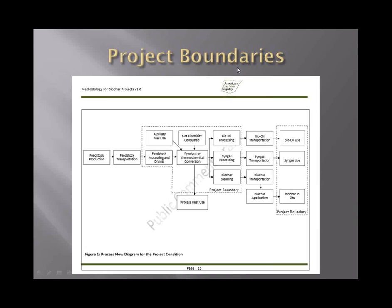We take everything from the sustainable feedstock product, transportation through the pyrolysis process, either the biochar blending, the syngas processing, bioprocessing, through to their eventual use. What's included in the dotted lines in this diagram illustrates what parts of this are within the project boundary. This becomes important later when we look at what items we have control over and what items we may need to quantify. Elements include electricity, auxiliary fuel use, any drying or processing of the feedstock, all the way down to the use of three streams — the liquid, the gas, and the solid stream — that can come off of a biochar project.